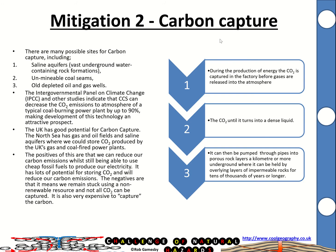The second mitigation option is carbon capture, which we can do naturally or industrially. When we produce energy, the CO2 can be captured in the factory before gases are released into the atmosphere using filters. The CO2 is then turned into a dense liquid and pumped into porous rock layers a kilometre or more underground, where it will be trapped and held — essentially trapping the carbon in the Earth's crust.